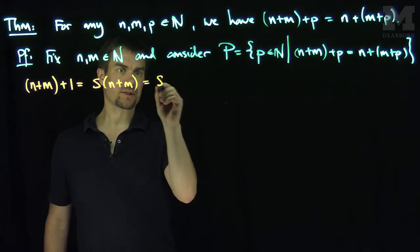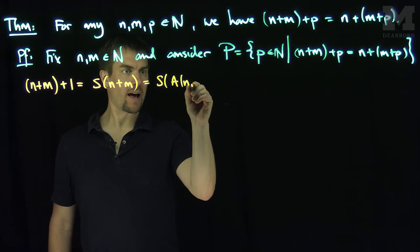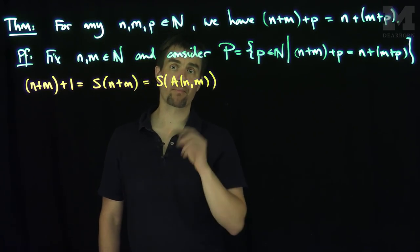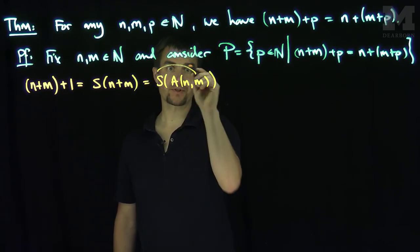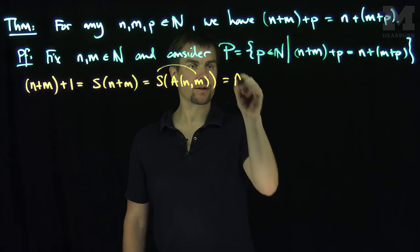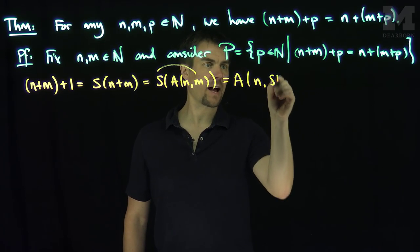Now this of course is the successor of A(n,m), just a different notation for us. And we know by properties of addition that I can put the successor on the second slot. So this is the addition of n and S(m).